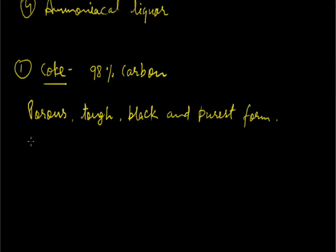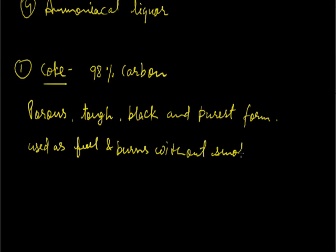As it contains a high amount of carbon, it can be used as fuel and it burns without smoke. As we know, coke has other valuable uses rather than fuel, so it is seldom used as fuel. Rather, it is used as a reducing agent in extraction of metals in the process of metallurgy.